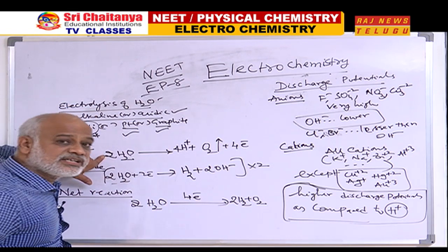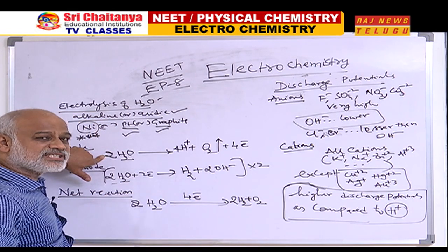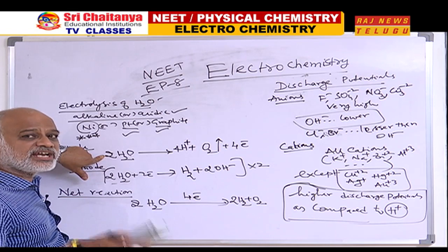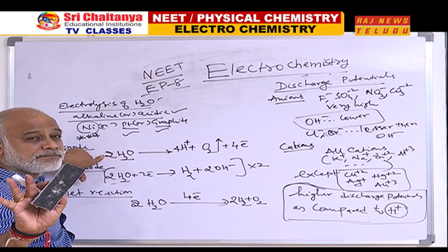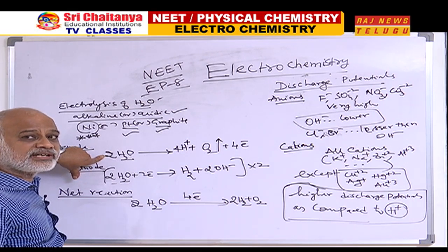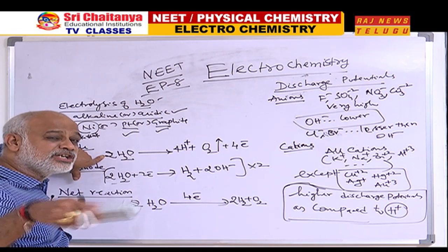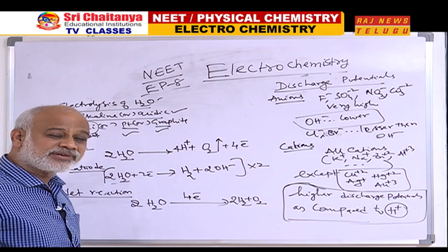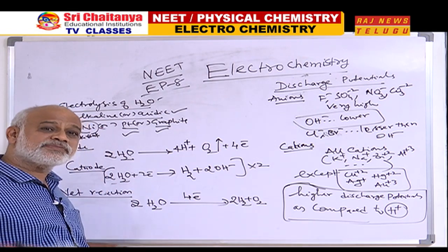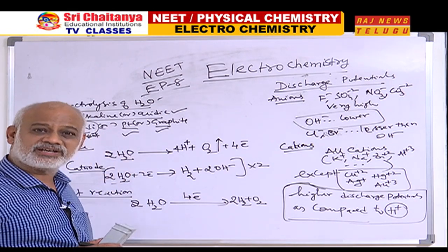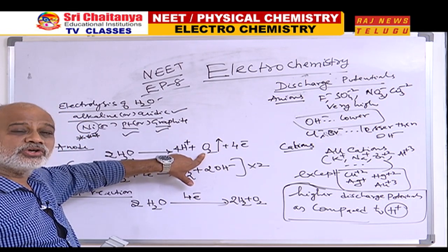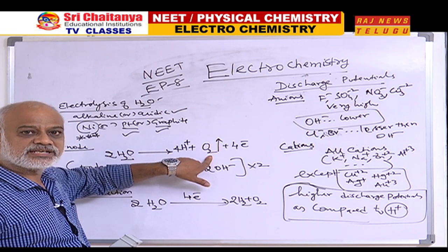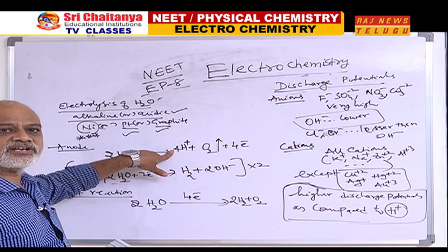Even though water is the one which undergoes oxidation, for simplicity we say the OH⁻ ions of water lose electrons to become O₂. The OH⁻ ions of water lose electrons and get converted to O₂; H⁺ remains. So O₂ gas is liberated at anode. At cathode, the H⁺ part of water gains electrons to form H₂. OH⁻ is not participating at cathode.